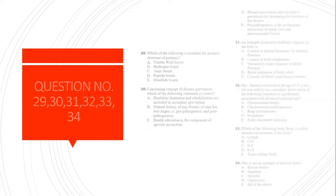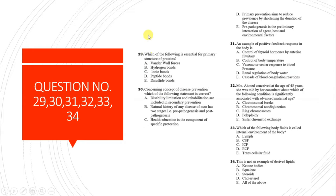Question 29: Which bond is essential for the primary structure of proteins? Peptide bond is the correct answer. The peptide bond forms the primary structure of proteins, which is a sequence of amino acids joined by peptide bonds.